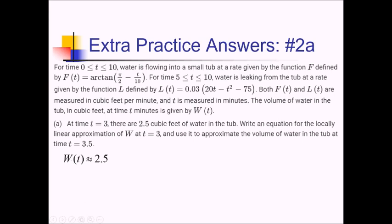W of T is approximately 2.5 plus W prime of 3 times T minus 3. W prime of 3 is the rate of change of volume at time 3. Since water doesn't start leaking until time 5, between 0 and 5 W prime is just the F function. So this is F of 3 times T minus 3, valid for times 0 to 5. Now we just have to use this to approximate W of 3.5.